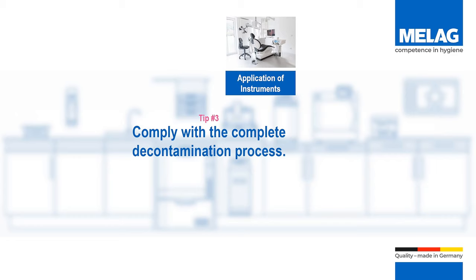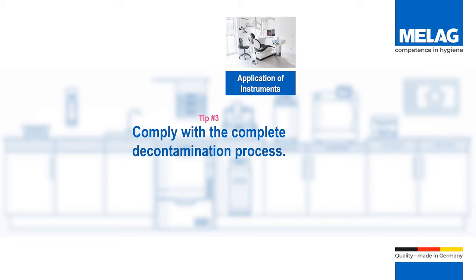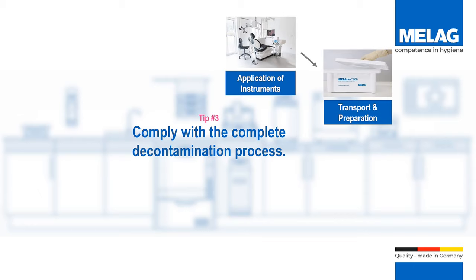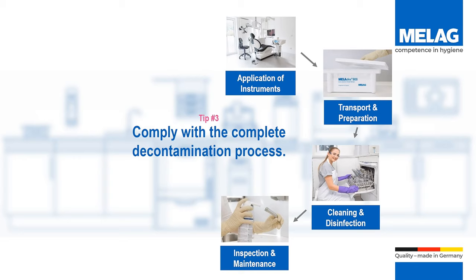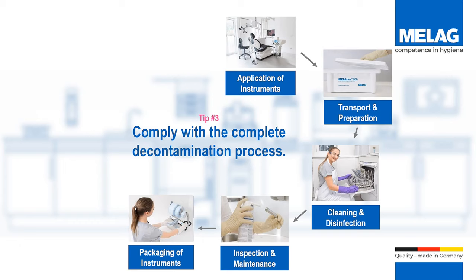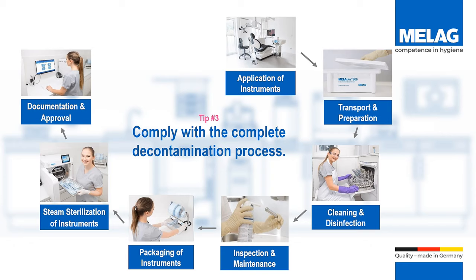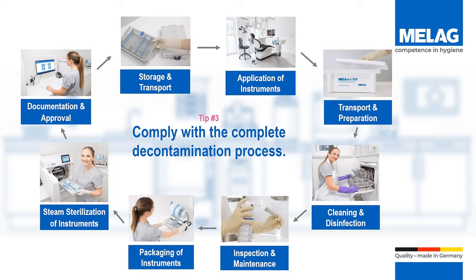The complete instrument decontamination process starts with the use of the instruments and consists of transport in a closed container, preparation especially of water-insoluble materials such as alginate and lubricants, automated or manual cleaning and disinfection, inspection, maintenance and lubrication of handpieces in compliance with manufacturer specifications, wrapping of the instruments, steam sterilization, and documentation and approval. Sterile instruments must not be recontaminated during transport and storage. Therefore, sterilized instruments are safely wrapped to prevent recontamination and must be stored at room temperature in a clean, dry location, protected from dust.